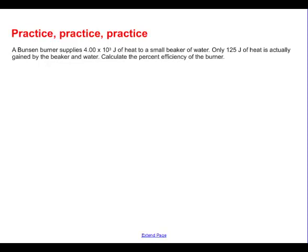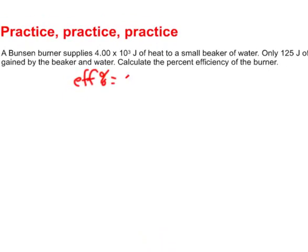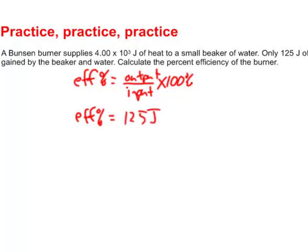Lastly, a Bunsen burner supplies 4.00 times 10 to the third joules of heat to a small beaker of water. Only 125 joules of heat is actually gained by the beaker and the water. Calculate the percent efficiency of the burner. It's going to be pretty small, that's for sure, because 125 joules out of 4.0 times 10 to the third ain't much. So here we go. Efficiency percent is equal to the output divided by the input multiplied by 100%. Okay, so what do we know? Well, we're trying to calculate the efficiency percent, so that stays the output. Well, what it really did that was useful is it put 125 joules of heat into the beaker. It wasn't much. The input, however, was pretty big. The Bunsen burner put in 4.00 times 10 to the third joules multiplied by 100%. Okay, so there's our setup calculator time.